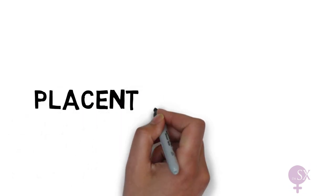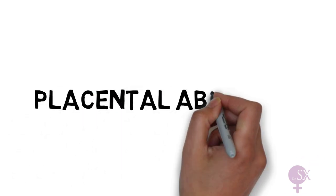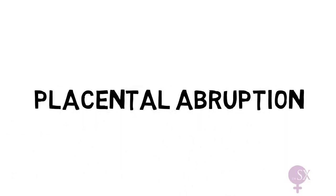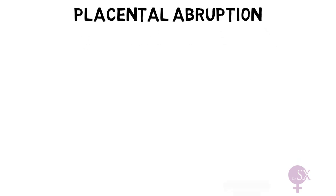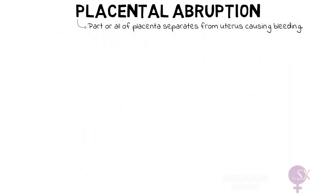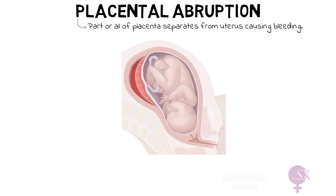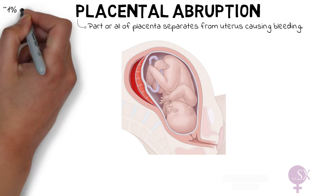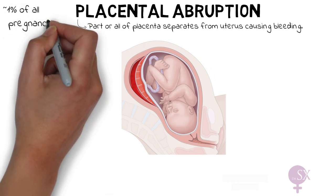Hi, my name is Sarah and in this video I shall be talking about placental abruption. Placental abruption is when part or all of the placenta separates from the lining of the uterus before delivery of the fetus. When this happens, a considerable amount of bleeding occurs behind the placenta. Placental abruption occurs in 1% of all pregnancies.